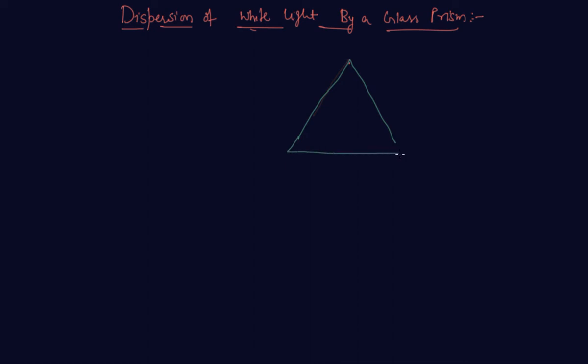Okay students, so a white light beam is coming. Let's say this is a white light beam. Let me show it with a different color. White beam is coming. So it should go in this direction, but it bends. We see that there are different angles.